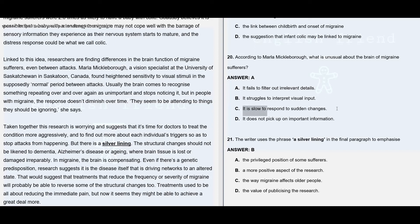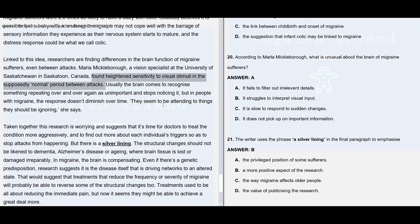Option C said it is slow to respond to certain changes — no such information. Option D says it does not pick up on important information — the information given is about picking up unimportant information, not about failing to pick up important information. So that is clearly not given, and option A remains the correct answer.